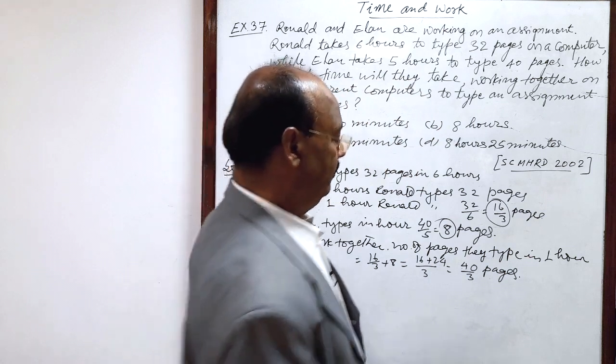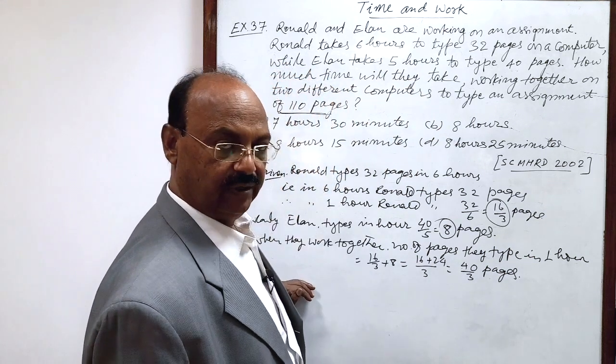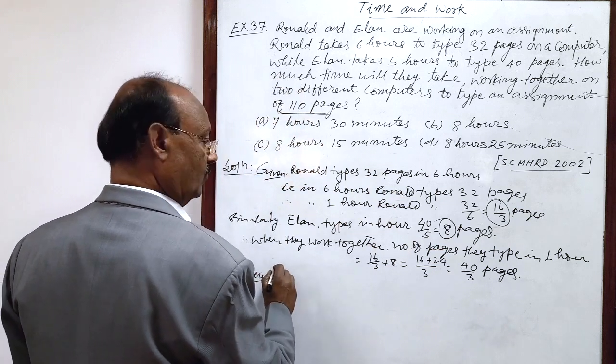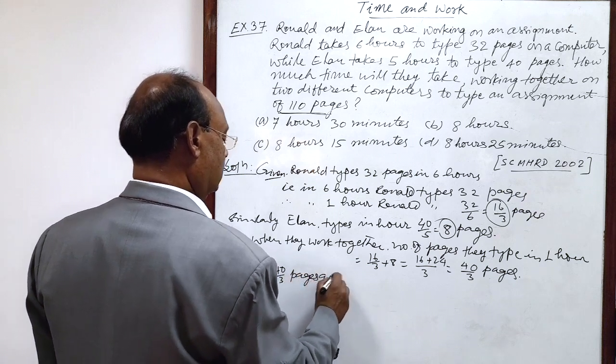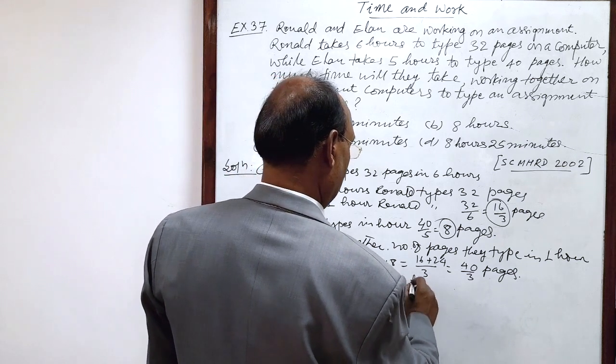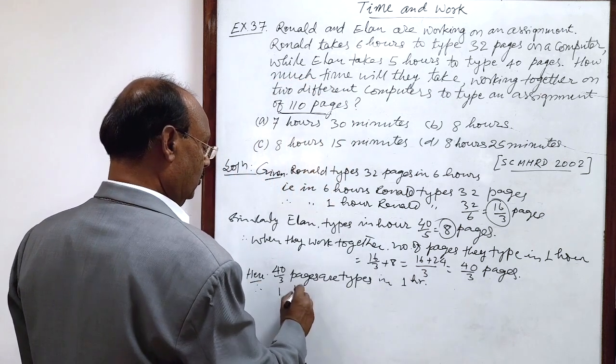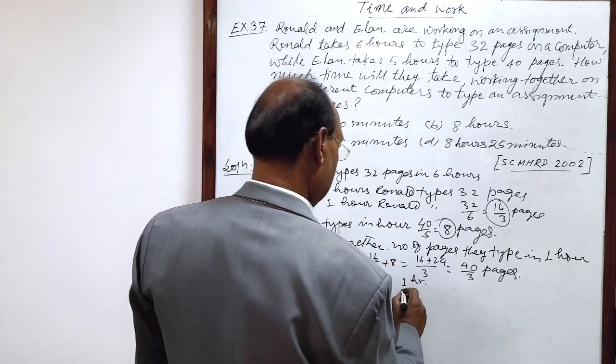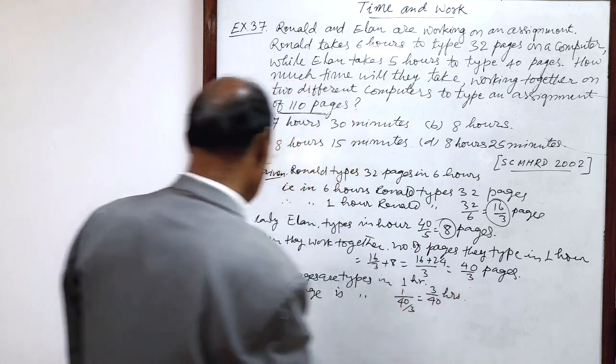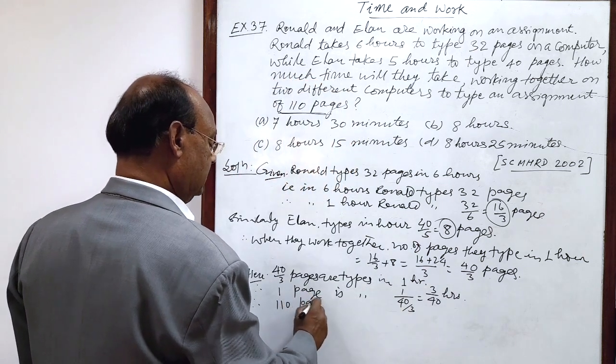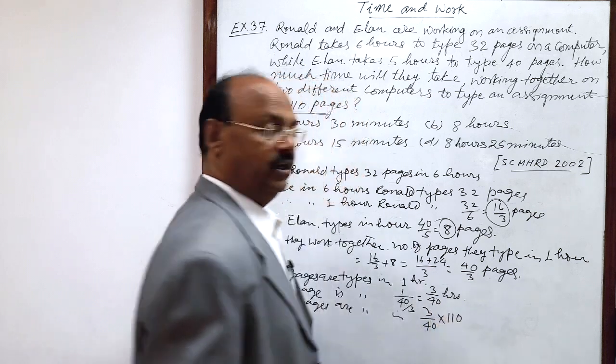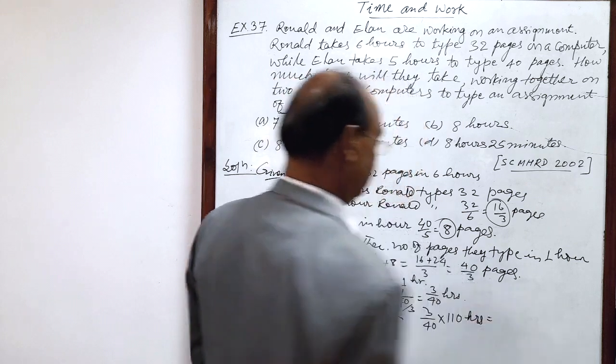Now, by unity method, 40 by 3 pages can be typed in one hour. So, 110 pages, we can calculate very easily. Here, 40 by 3 pages are typed when they work together in one hour. Therefore, by unity method, one page is typed in 1 by 40 upon 3. This is equal to 3 by 40 hours, and therefore, 110 pages are typed in 3 by 40 into 110 hours. Let us simplify it, we will get the answer.